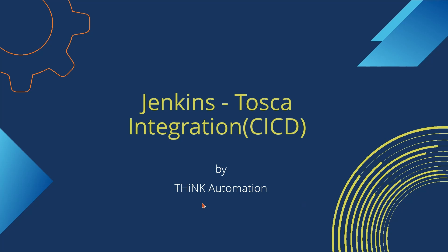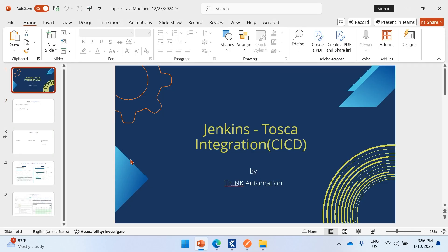The topic for the day is how to integrate Tosca with Jenkins in a CI/CD pipeline. CI/CD is a continuous process — for example, you have a development team committing code and deploying to your application, and you want to trigger your test execution immediately. There are many CI/CD tools available in the market like Jenkins, ADO, GitHub, and GitLab.